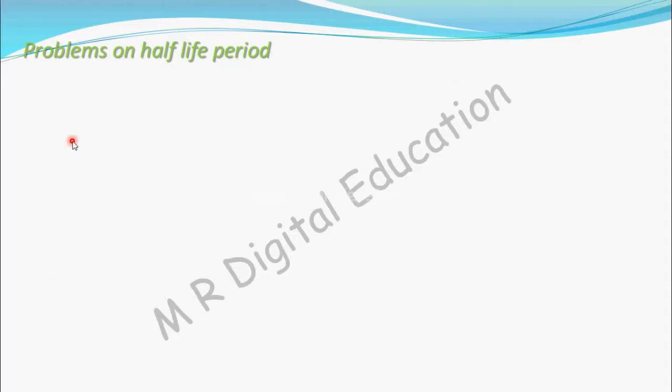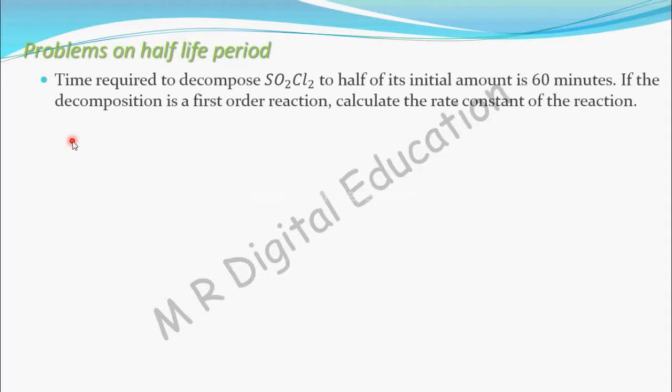See one more problem on half-life period. Time required to decompose SO2Cl2 to half of its initial amount is 60 minutes. If the decomposition is a first-order reaction, calculate the rate constant of the reaction.